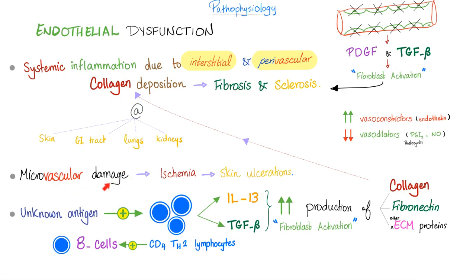Microvascular damage means no blood supply, no oxygen, leading to skin ulcerations. The T lymphocytes will react to an unknown antigen, leading to proliferation. Then the T helper cells — specifically T helper 2 — become involved. What's the difference between T helper 2 and T helper 1?